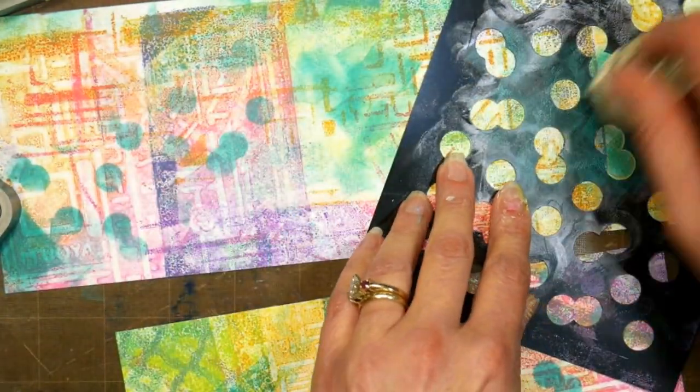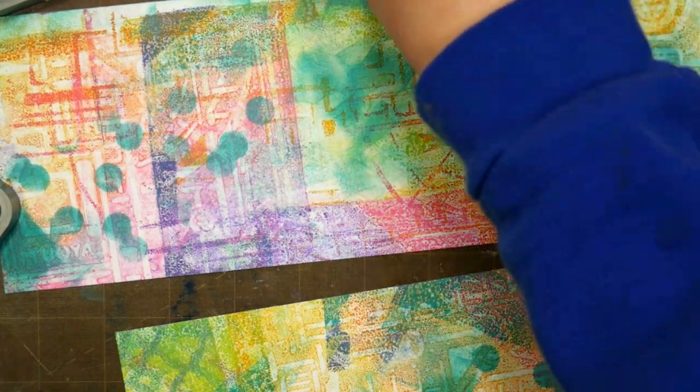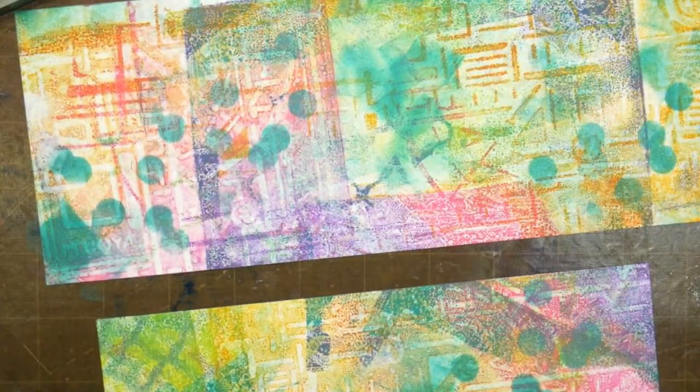You can also go over it with stencils and add even more pattern on top. Try to repeat designs you've already used when possible, and that way you'll have that nice rhythm and repetition on the back side of the artist trading coin that you had on the front side.